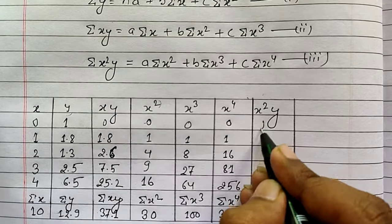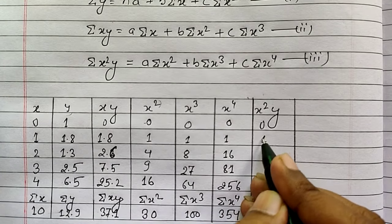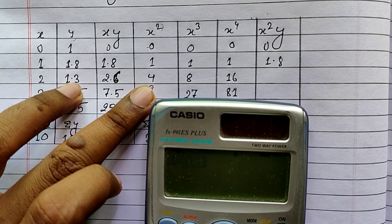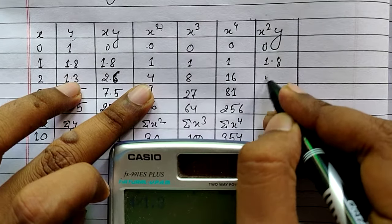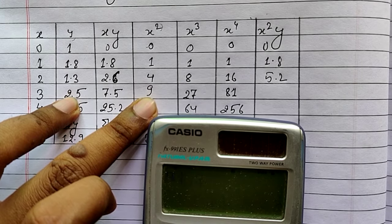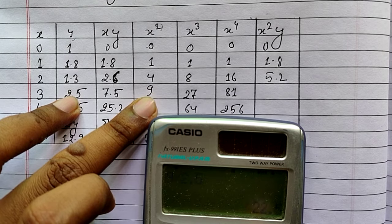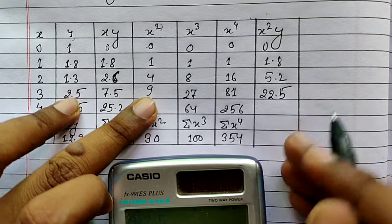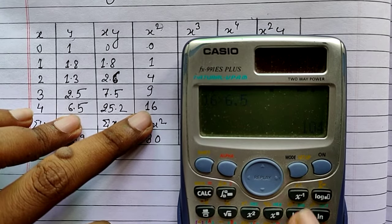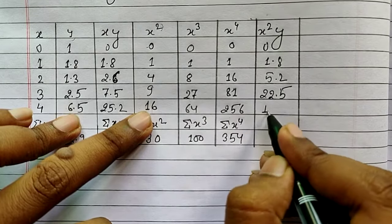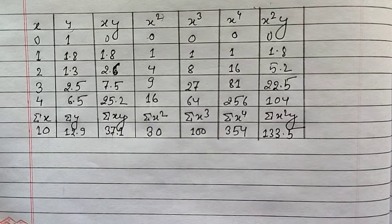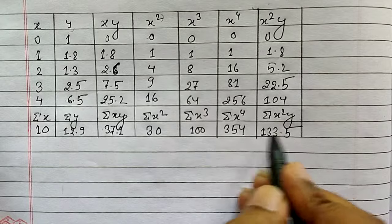Calculating x squared y: 1 times 0 is 0, 1.8 times 1 is 1.8, 4 times 1.3 is 5.2, 9 times 2.5 is 22.5, and 16 times 6.5 equals 104. Now find the summation of x squared y, which gives 133.5. After getting this value, we return it to the equations.